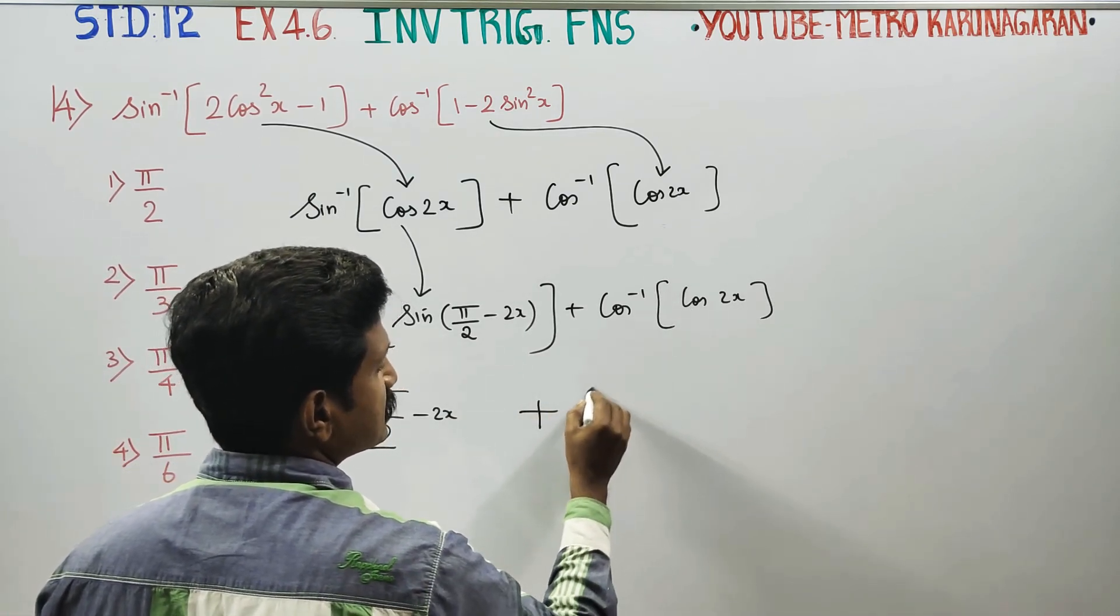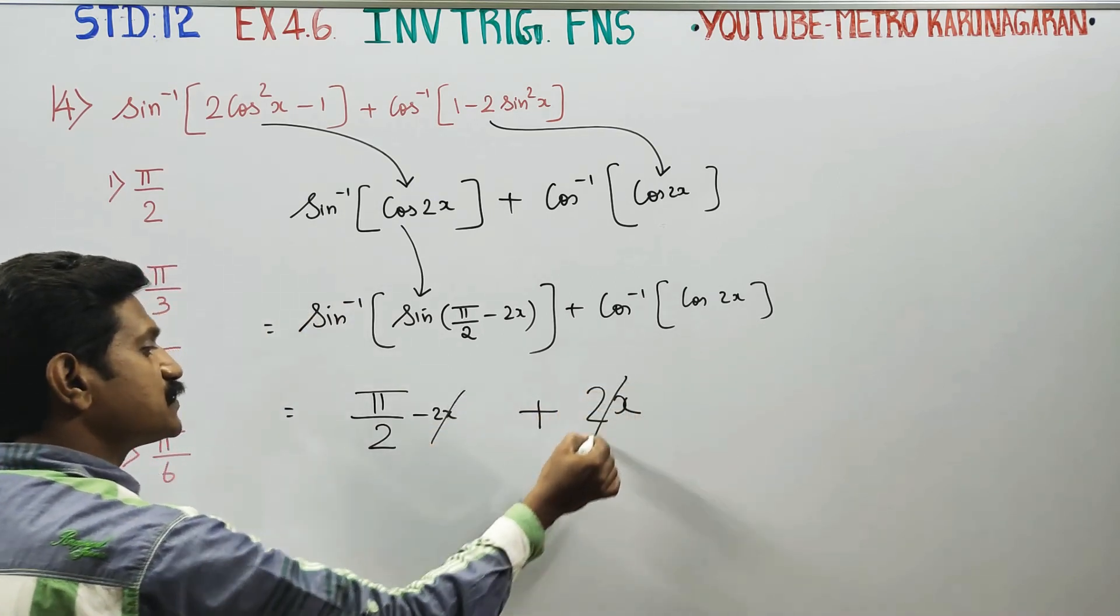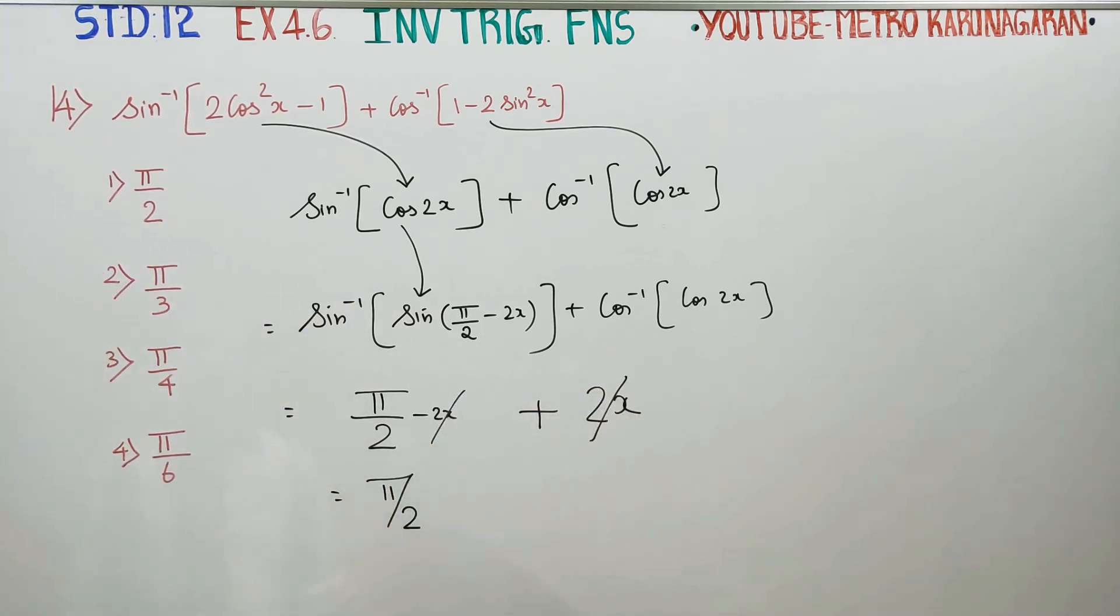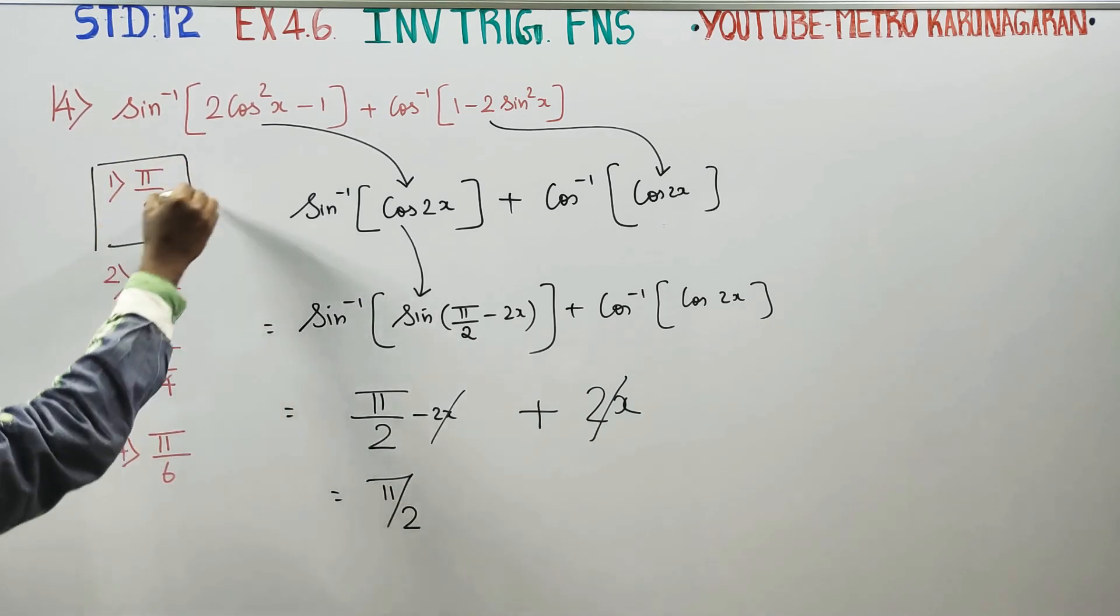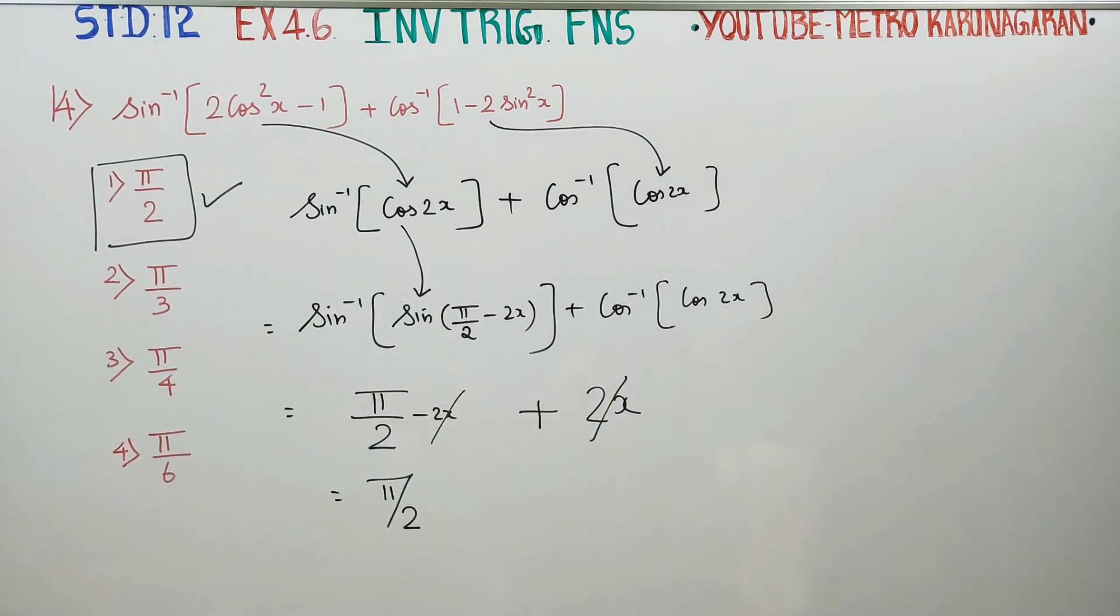Cos inverse of cos cancels to 2x. Simplifying, π/2 minus 2x plus 2x equals π/2. Therefore, option 1 is the correct choice for question number 14. Thank you.